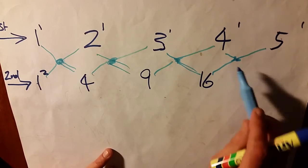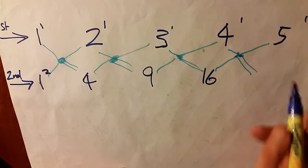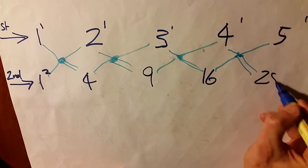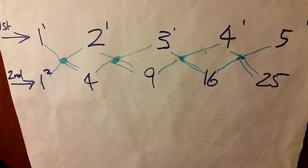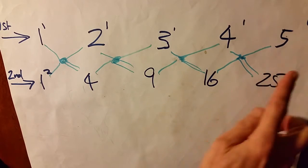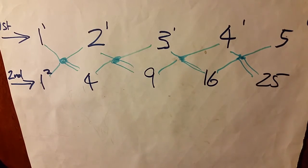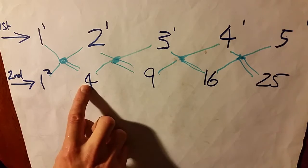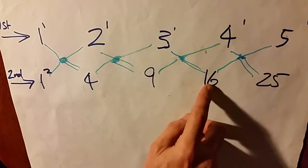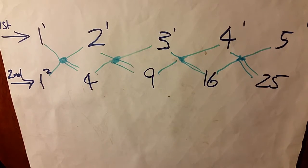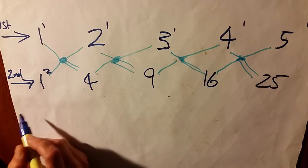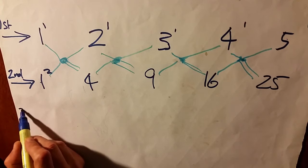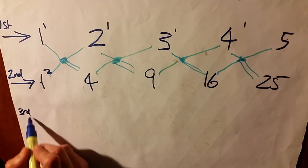So there's a connection between the 1st dimension and the 2nd dimension — this being 2 squared, 3 squared, 4 squared, 5 squared — and let's look at how, now gathering a bit, if we go to the 3rd dimension.